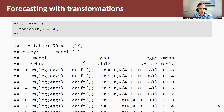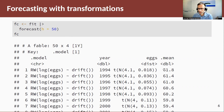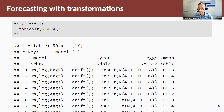It goes and estimates the model and estimates a transformed distribution — it knows how to transform using the log function. Notice that it actually returns the mean of that forecast distribution on the original scale. So it makes the back-transformation and makes the adjustment that I spoke about, giving you the mean that you're after.